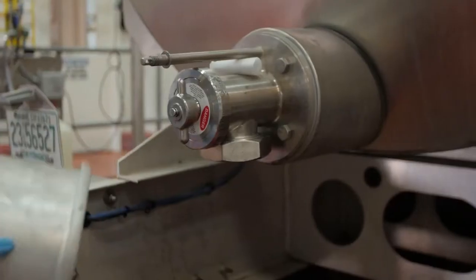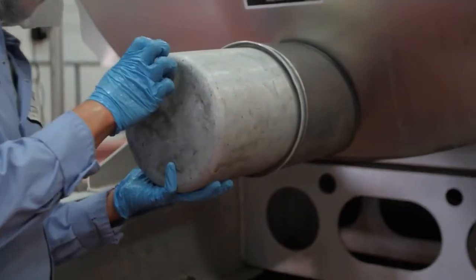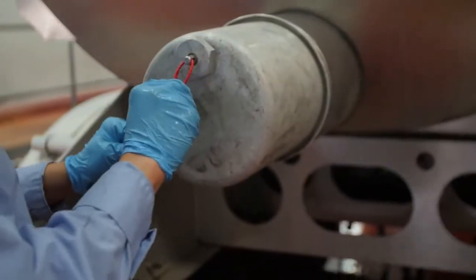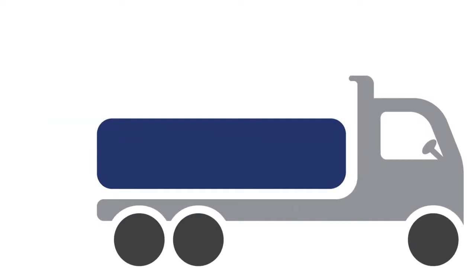There are several different ways that someone could deliberately attack the food supply. As a milk hauler or sampler, it's your specific responsibility to help protect the milk supply. In an exterior attack, a raw material used in production, such as milk, is contaminated where it's grown, transported, or processed.